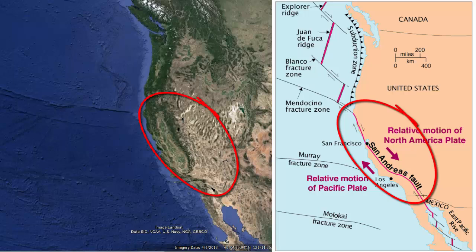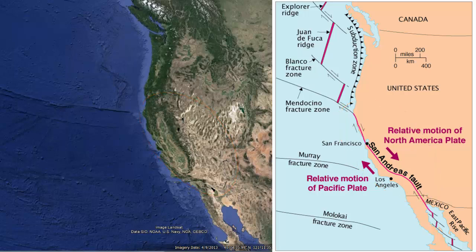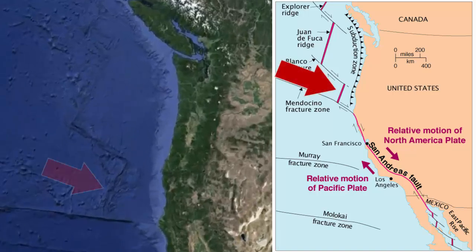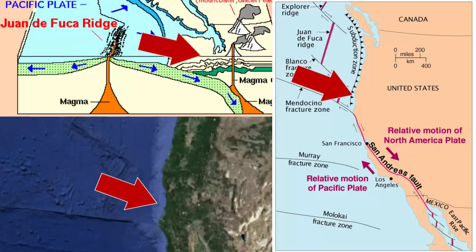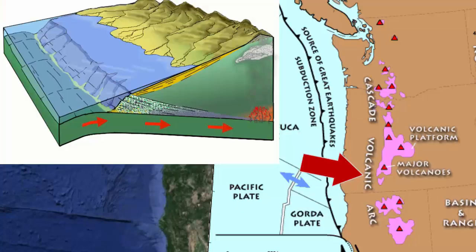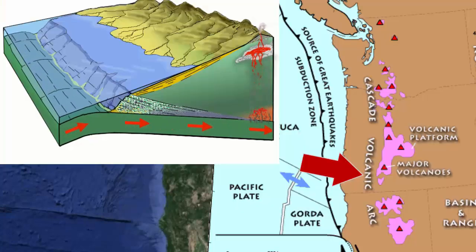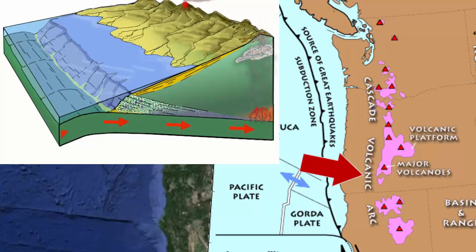As this map shows, we have a number of plate boundaries within or near the state. Notice at the northern part of California we have a divergent plate boundary, or an offshore seafloor spreading center, where new oceanic crust forms and then is pushed away. Here, along the coast, that crust collides with and then sinks under northern California. That produces a convergent plate boundary, where a plate with an oceanic crust leading edge collides with a plate with continental crust on the edge.